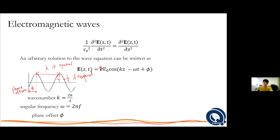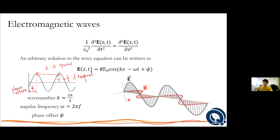Here we have a plot of how the electromagnetic wave looks like. You have the electric field and the magnetic field, both oscillating in sync. This is what light is — just a series of oscillating electric and magnetic fields.